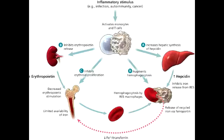The three Non-Hemolytic Normocytic Anemias include Anemia of Chronic Disease (ACD), Aplastic Anemia, and Anemias Related to Chronic Kidney Disease.